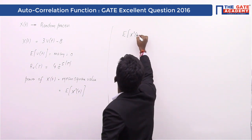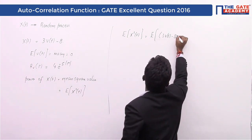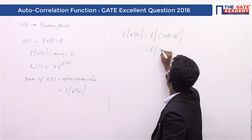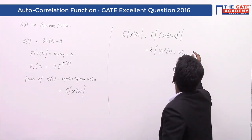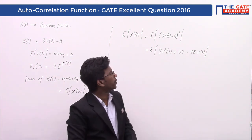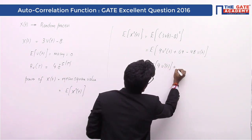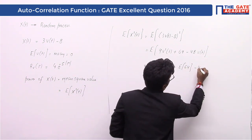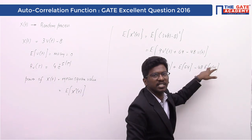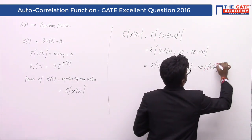E[x²(t)] is nothing but E[(3·v(t) - 8)²]. Expanding using (a - b)² = a² - 2ab + b²: E[9v²(t) - 48v(t) + 64]. Since expectation is a linear operator, this becomes E[9v²(t)] + E[64] - 48·E[v(t)]. Now, E[v(t)] is the mean of v(t), which is given as zero, so that term turns to zero.